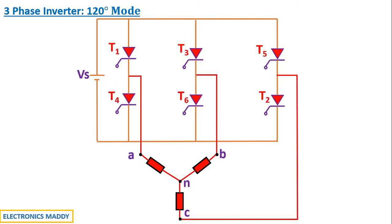But what is this 120 degree mode all about? The entire duration of conduction is considered with respect to 360 degrees. So if each of these thyristors is conducting for a total duration of 120 degrees, then the corresponding mode of operation is called 120 degree mode. It's very simple and straightforward.